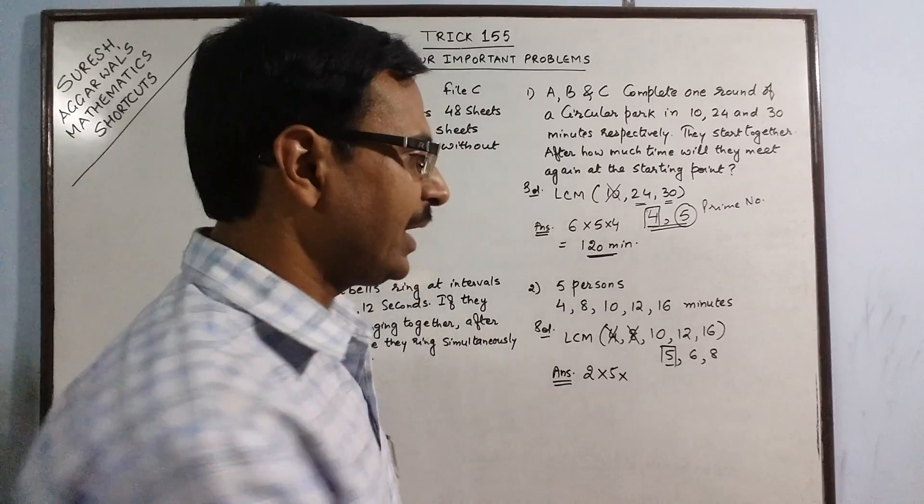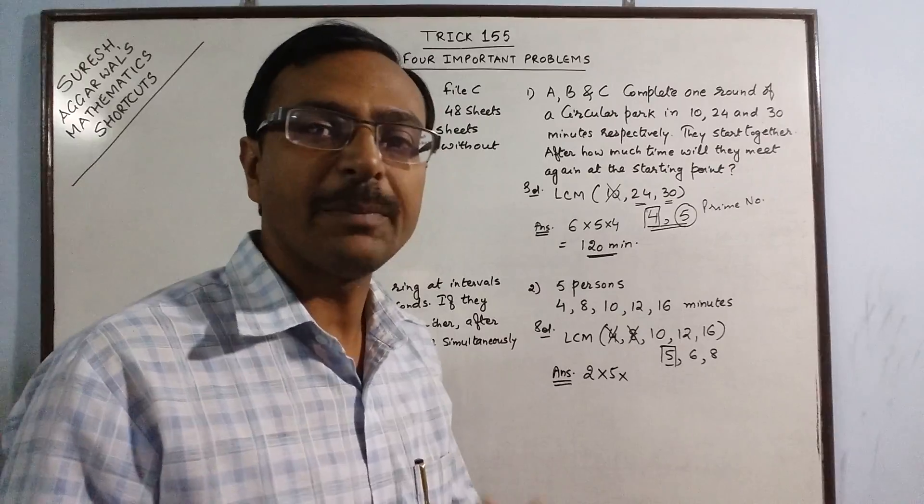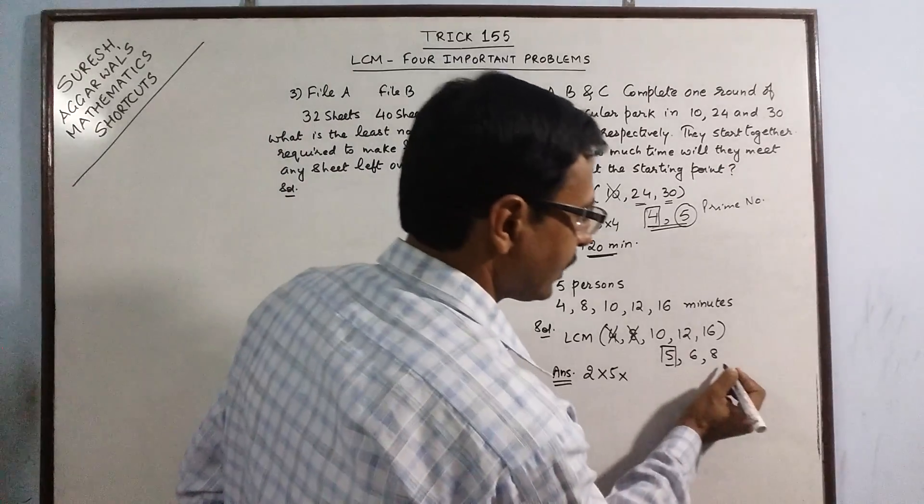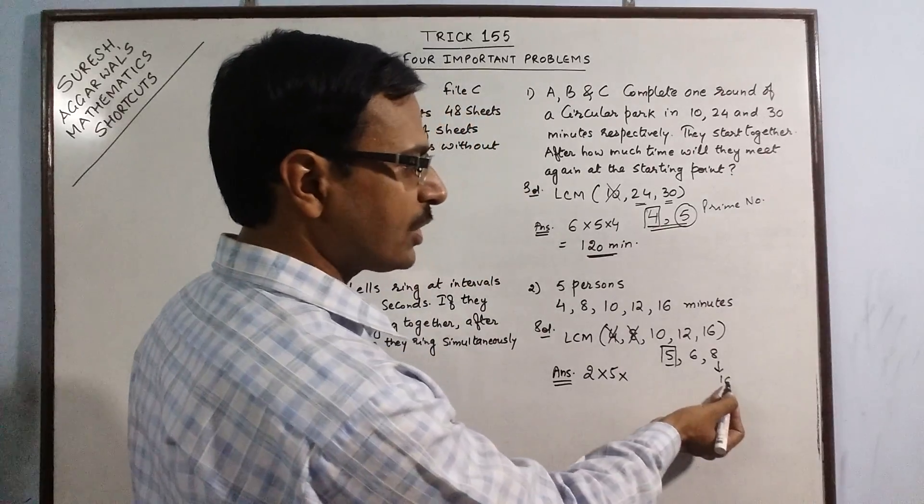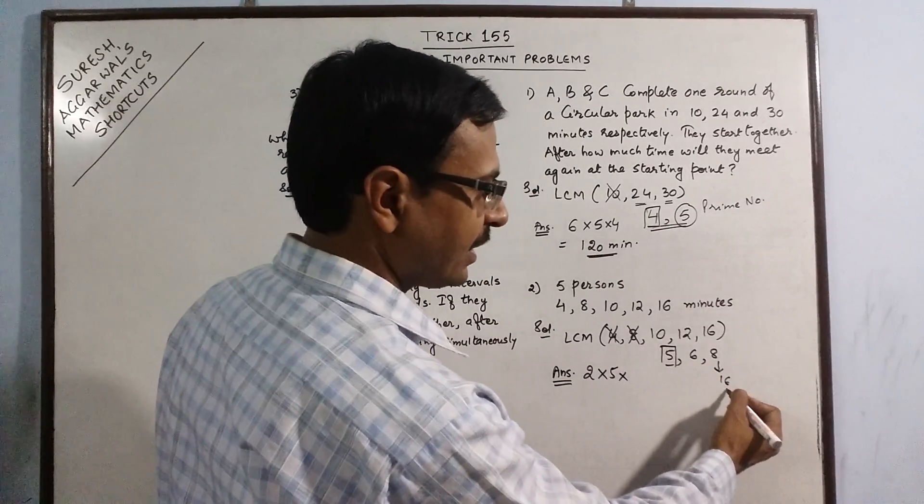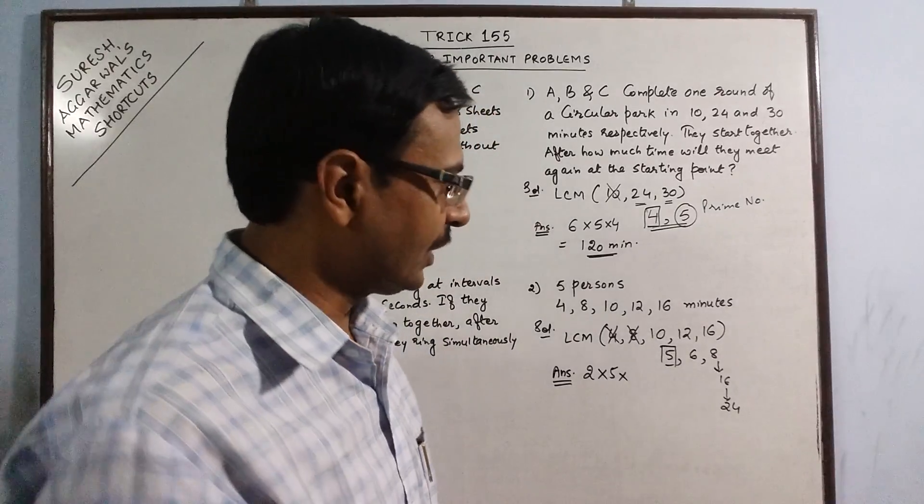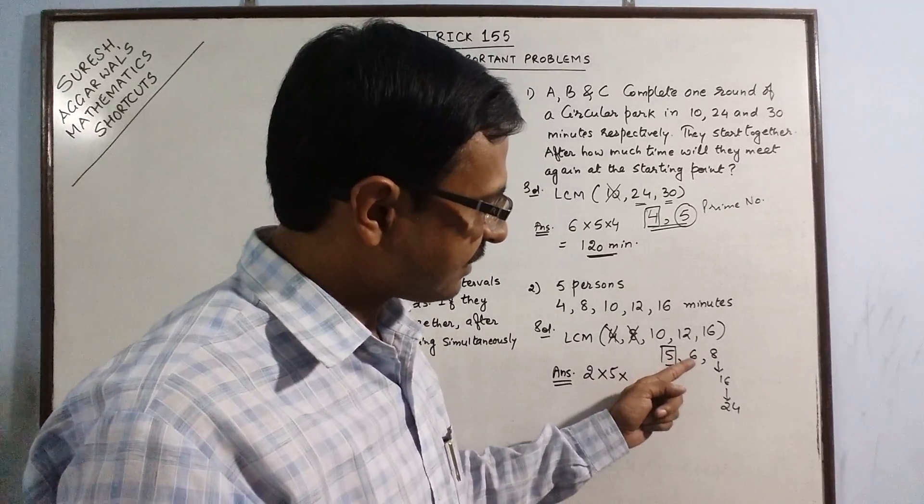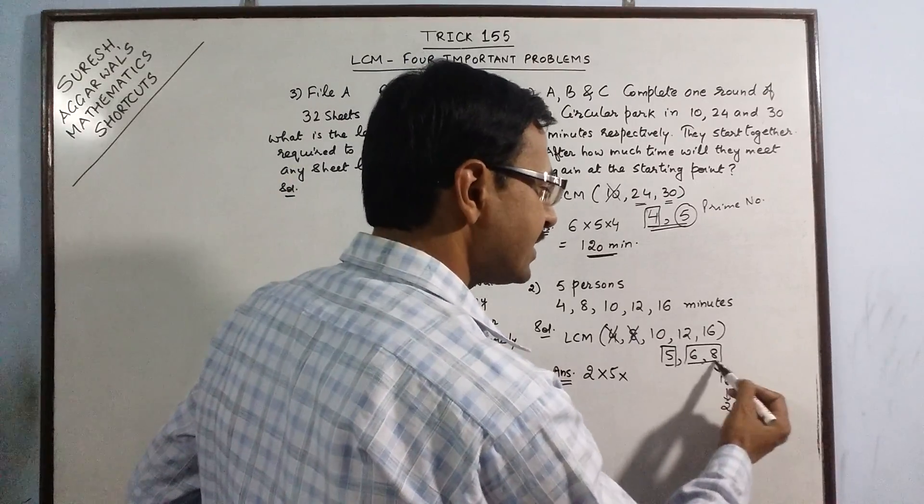8 is not divisible by 6. So just take the multiples of 8. What is the next multiple of 8? 16. 16 is not divisible by 6. Go further, 24. Now you observe 6 divides 24 exactly. So the LCM of these 2 numbers is 24. So just take 24 here.